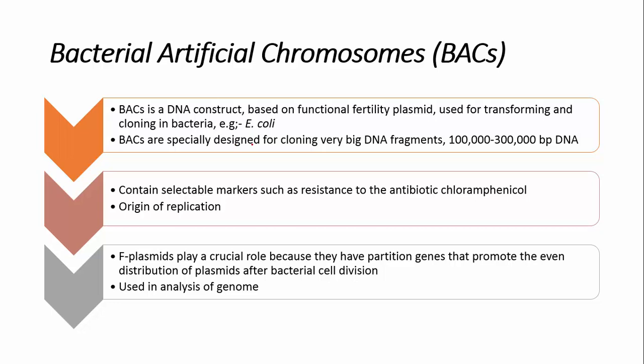Bacterial artificial chromosomes are specially designed for cloning very large DNA fragments ranging in size from 100,000 to 300,000 base pairs of DNA. They also contain selective marker genes.